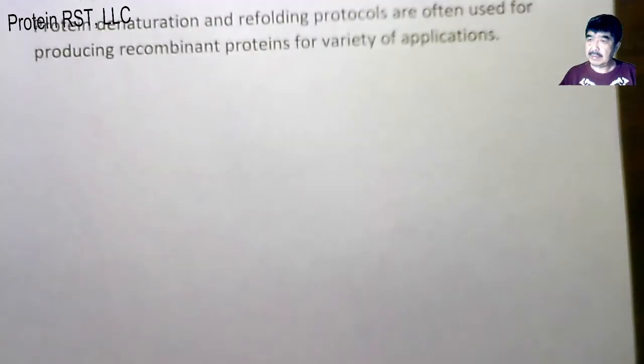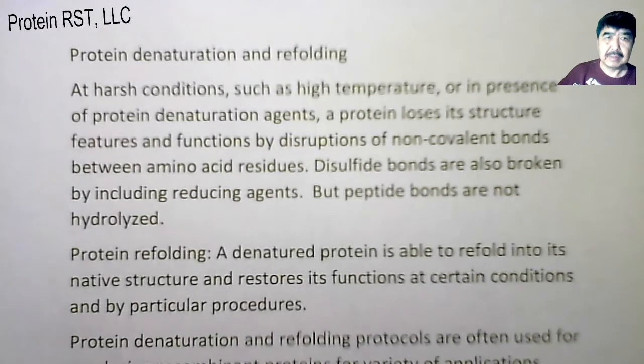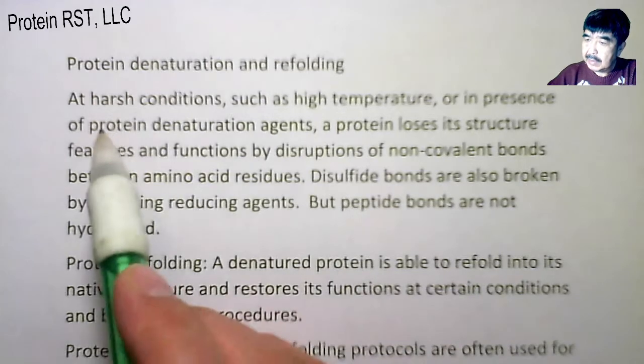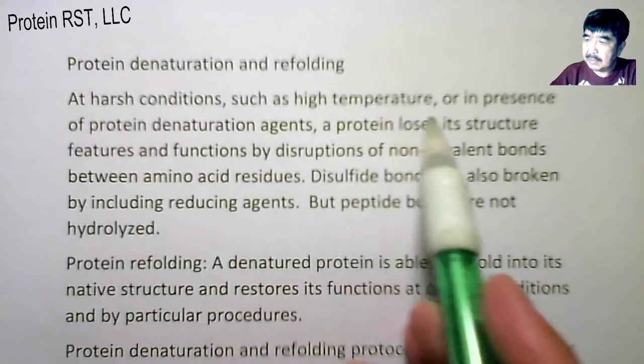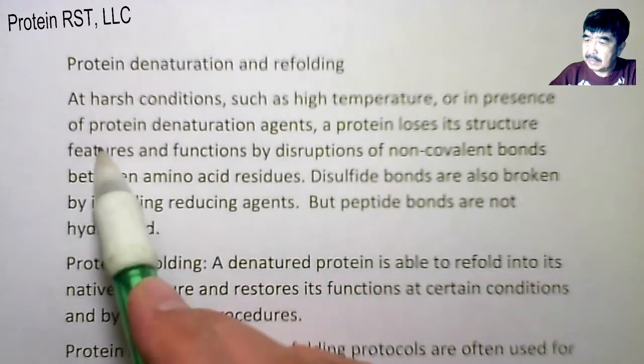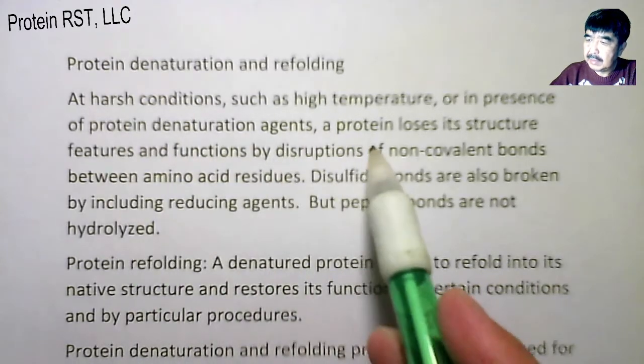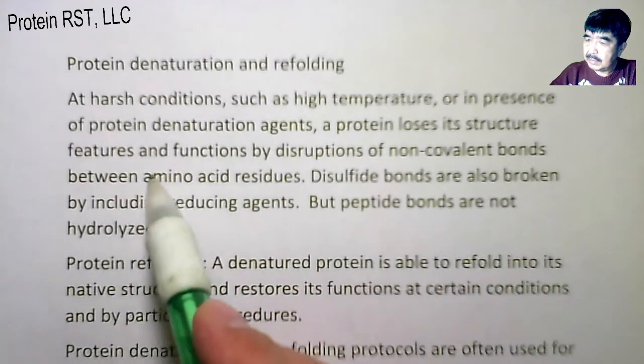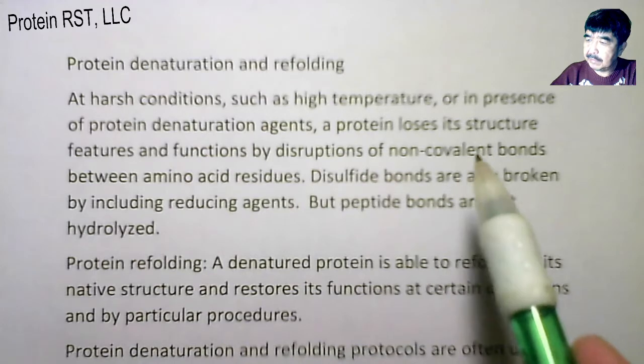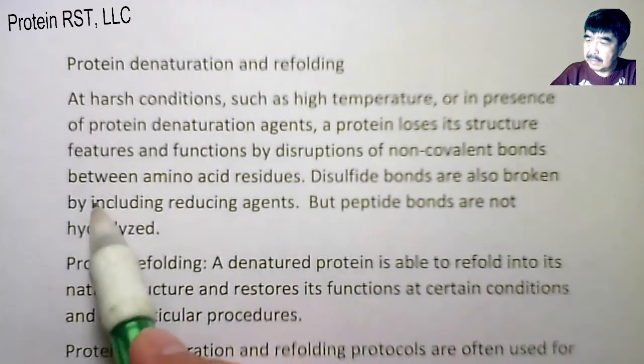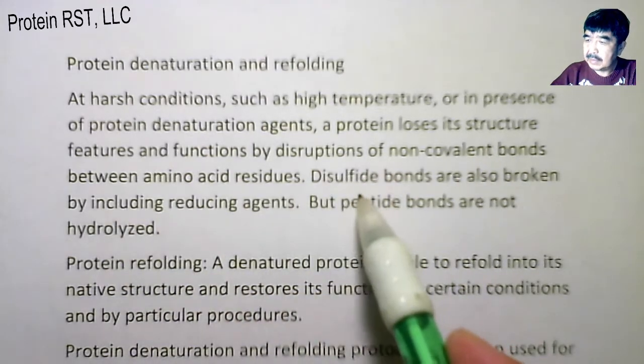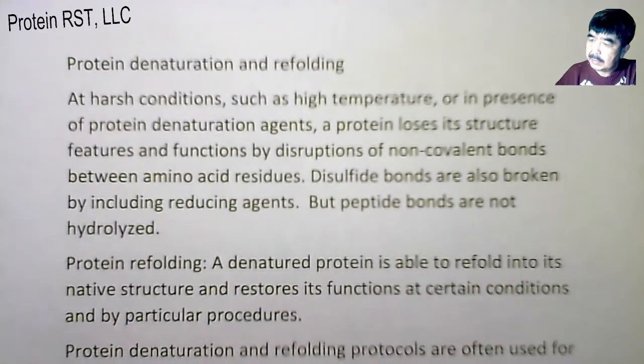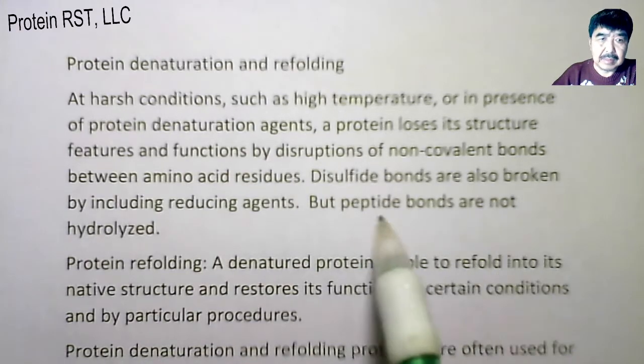Next, let's take a look at protein denaturation and refolding. At harsh conditions, such as high temperature or in presence of protein denaturation agents, the protein loses its structure, native structure features, and functions by disruption of non-covalent bonds between amino acid residues. Disulfide bonds are also broken by including reducing agents, but the peptide bonds are not hydrolyzed.